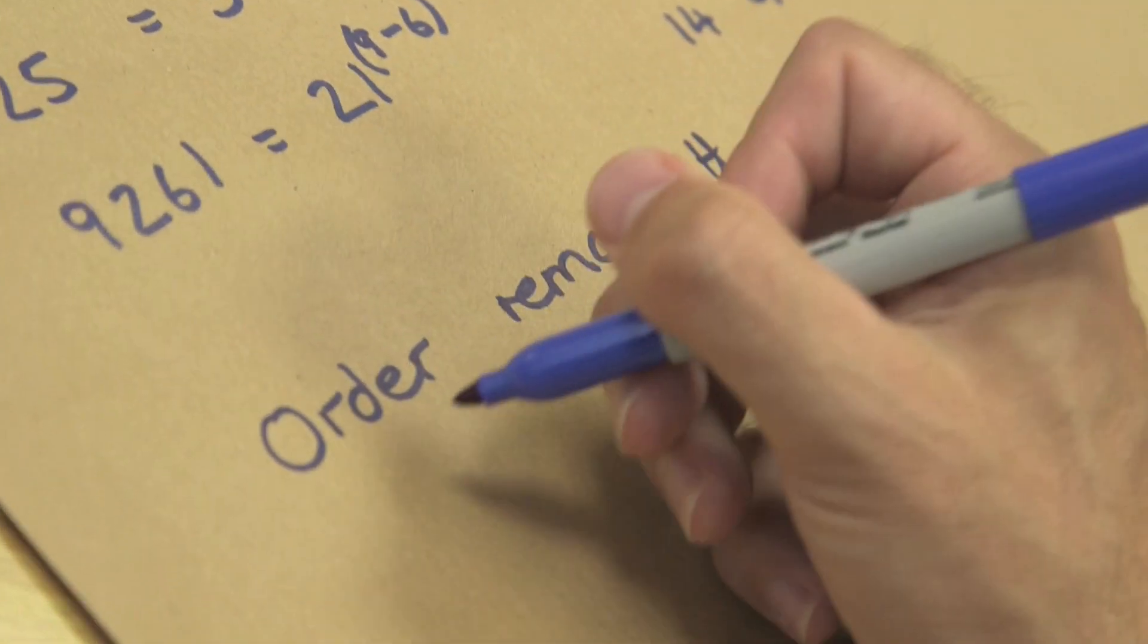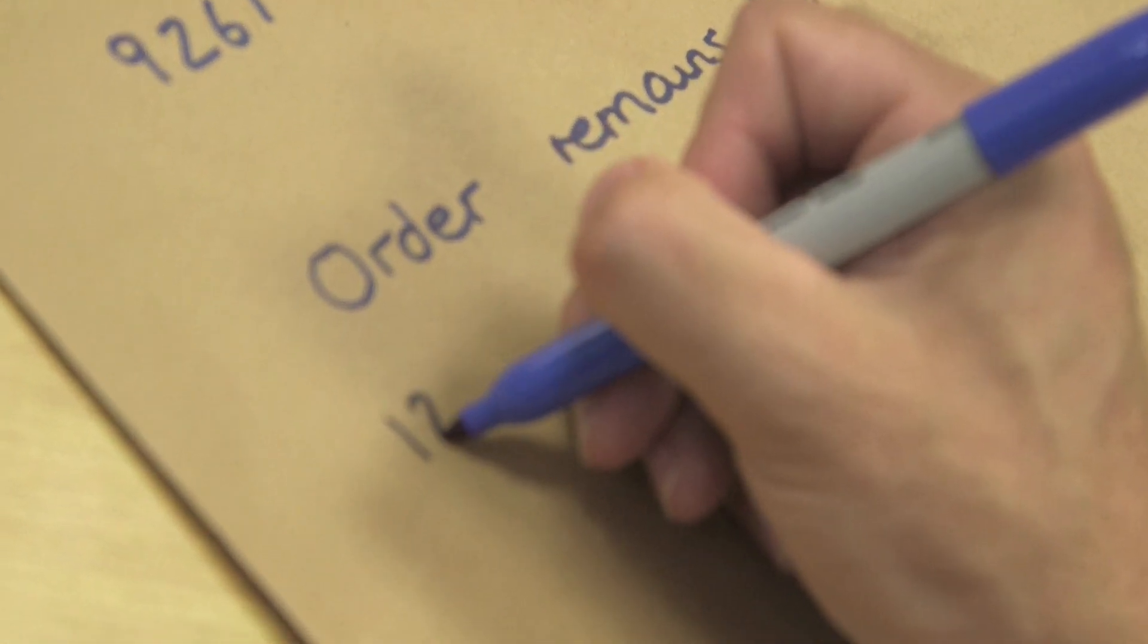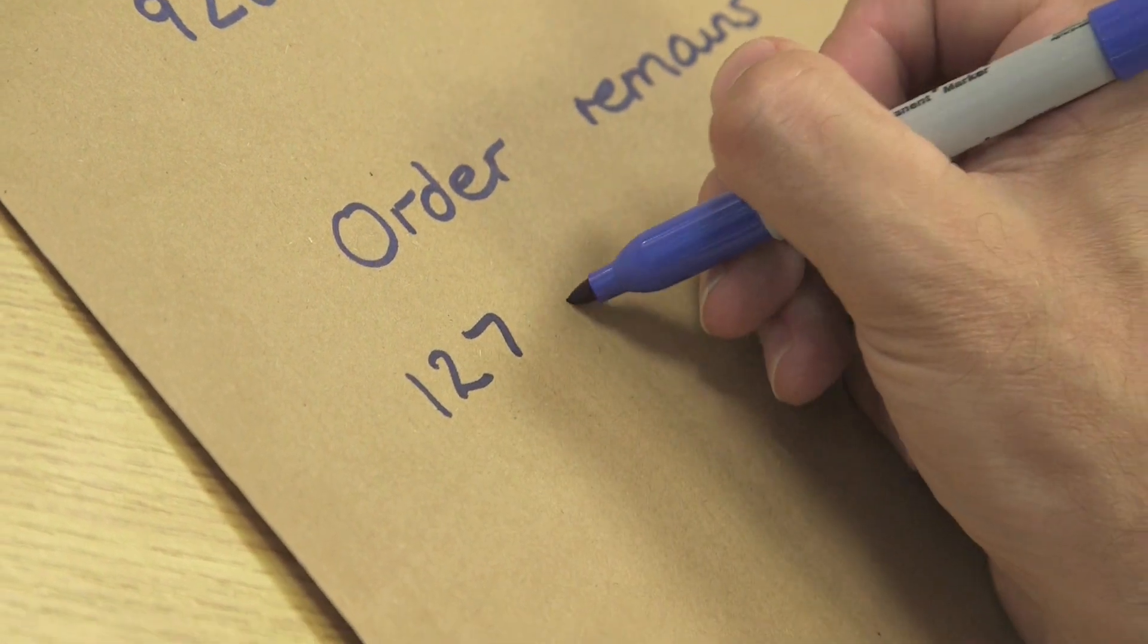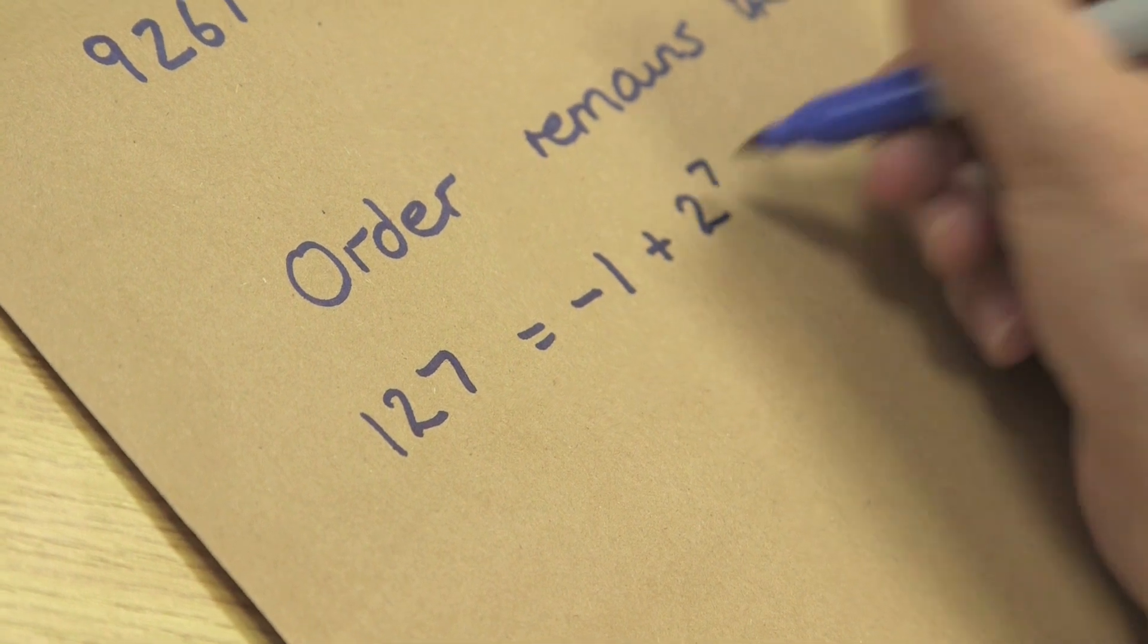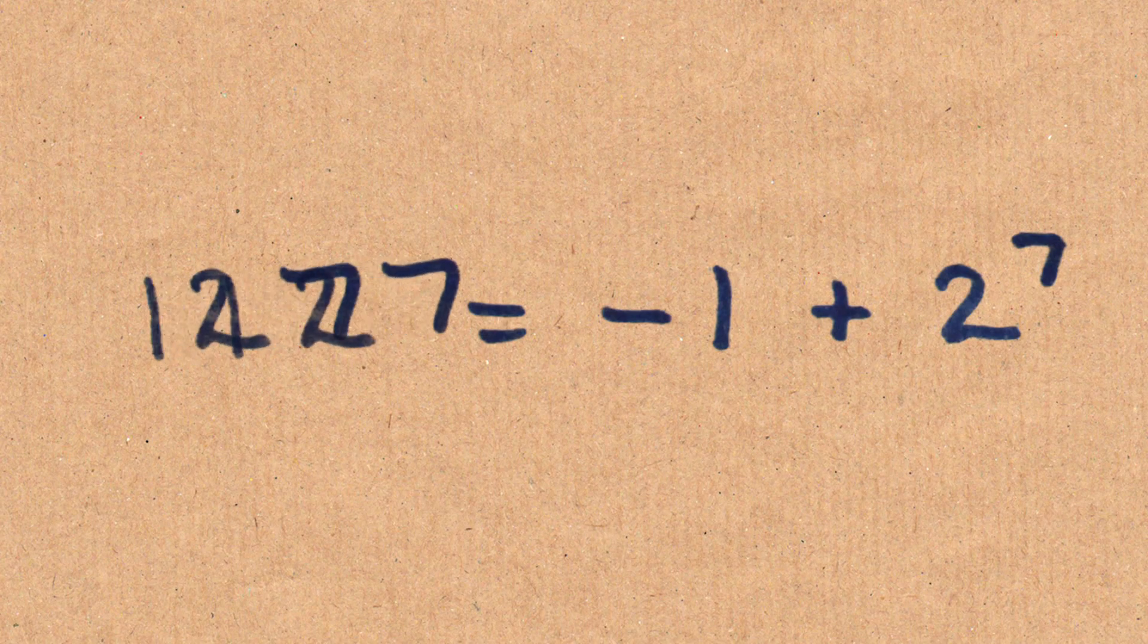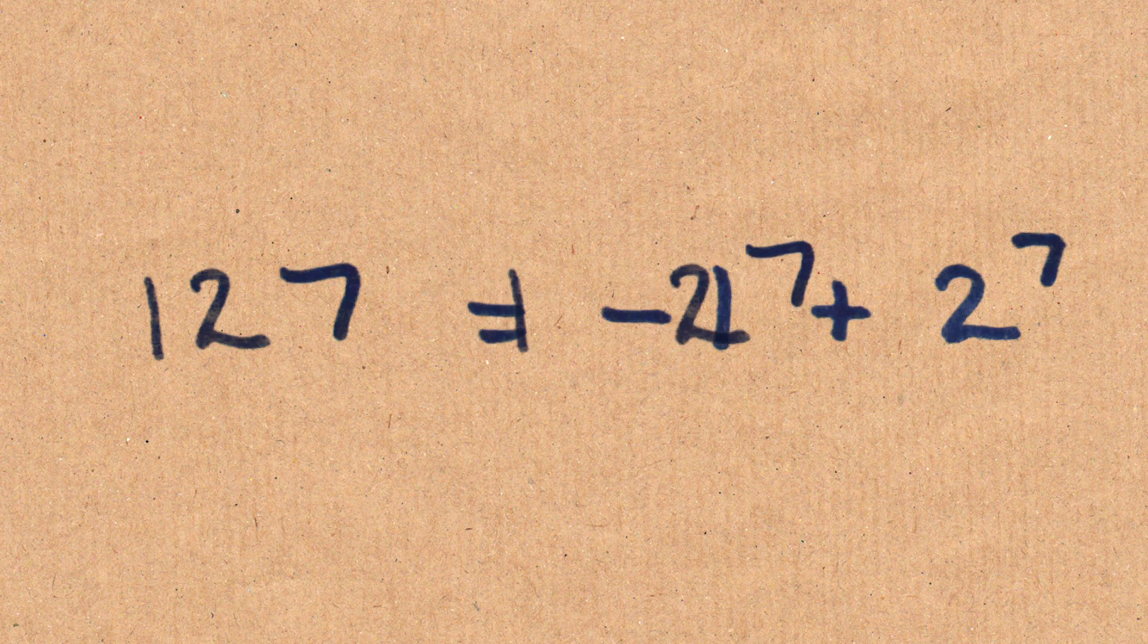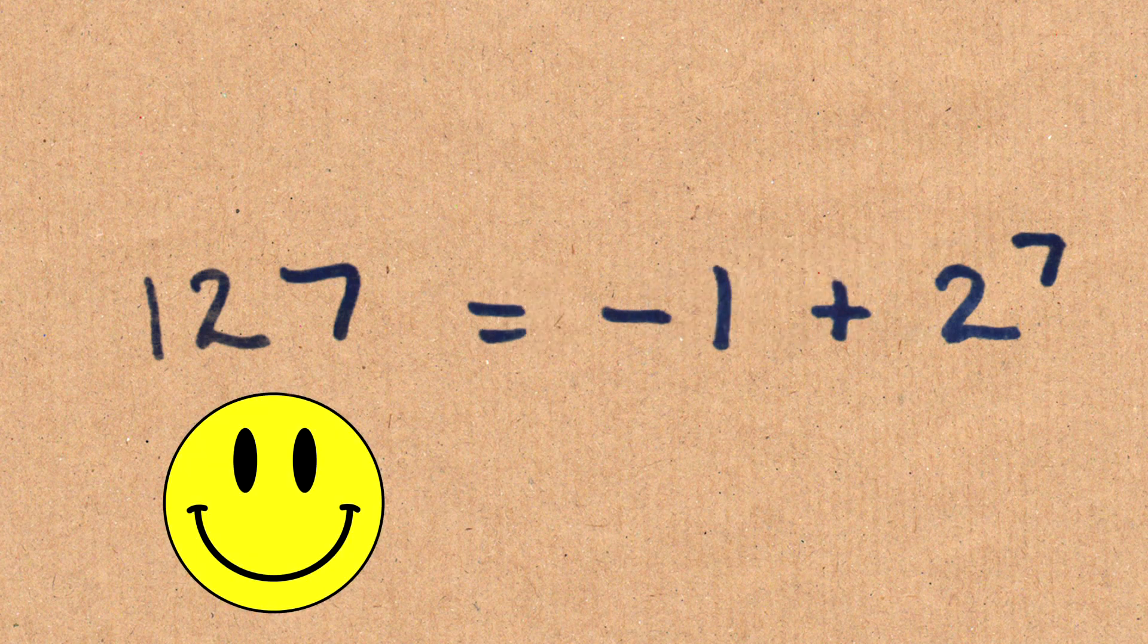So a simple one is 127. 127 is made up of minus 1 plus 2 to the power of 7. The order of the digits 127 is the same as appears on the right hand side.